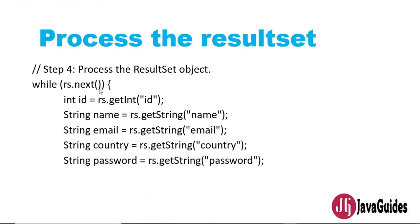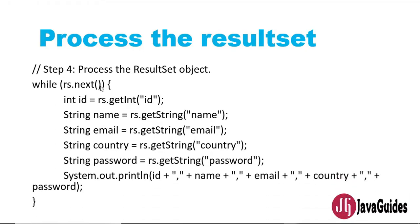The fifth step is processing the ResultSet object. The result set may contain many rows, so we need to iterate over it to retrieve the rows or data from the result set. These are the fundamental steps involved in the process of connecting to a database and querying it.